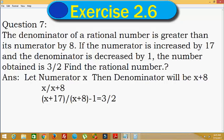Now we will solve for the value of x. So we write x plus 17 over x plus 8 minus 1, which is x plus 7, is equal to 3 divided by 2.